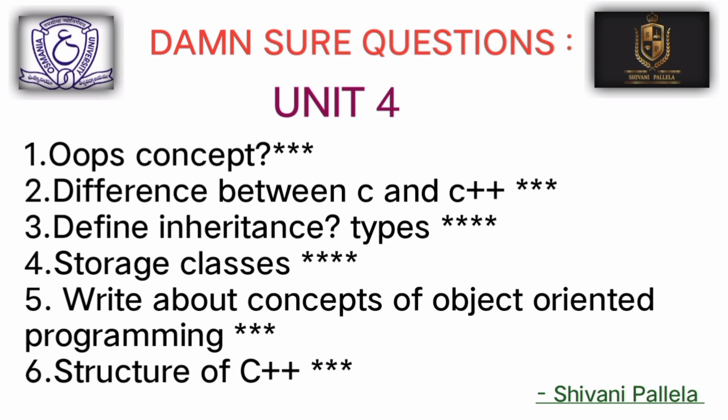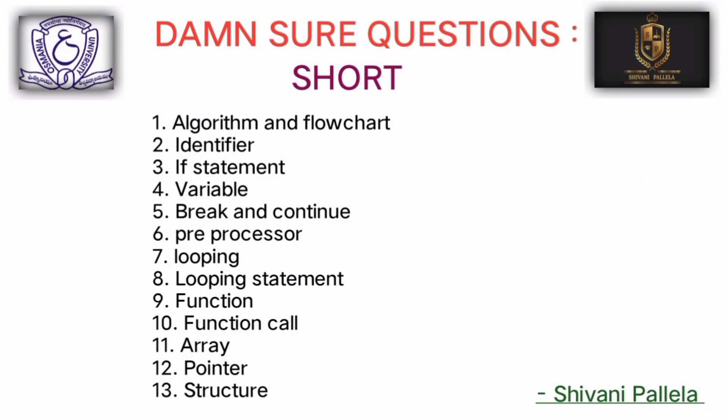Unit number five has six questions. Important topics include the structure of C++, differences between C and C++, OOPs concept — which is very very important — storage classes, and inheritance and its types, which is also very important. Out of 20 long questions, I have finalized 13 questions for you.